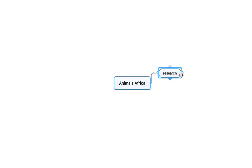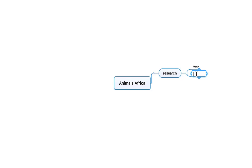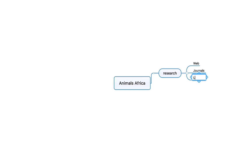I am going to tap into that and put 'Research', because you need to do research on the subject. Let's break that down a bit. Click the plus and type in 'Web' — probably the first place you go. Click back on research and then click on that. You might go to Google Scholar to look for some journals online, or internal libraries you might have in your Moodle, Blackboard, or portal. So I am going to put 'Journals' in there. Click back on research and create another branch and put 'Library' — let's say books as an example.